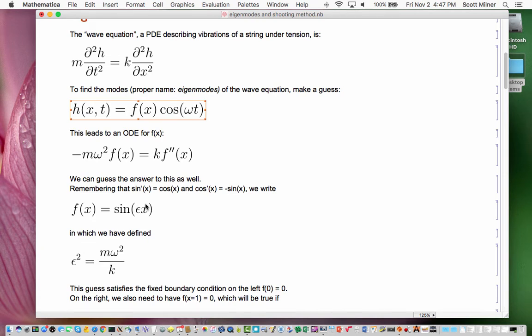For that to happen, the sine has to swing through an integer number of ups and downs. And that means that epsilon times 1 has to be, for example, pi, or 2 pi, or 3 pi, so that the sine swings through 1, or 2, or 3 swings from one end of the string to the other.